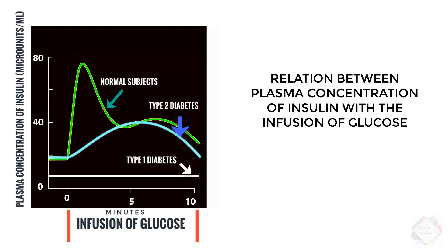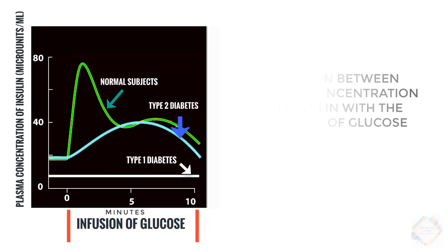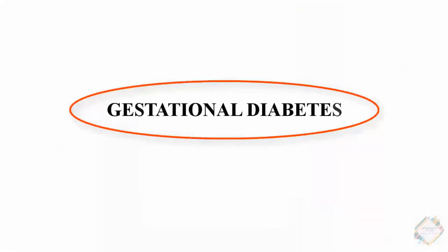In Type 2 diabetes, the beta cell mass may gradually decline over time. In contrast to Type 1 patients, those with Type 2 diabetes are often obese. Obesity contributes to insulin resistance, which is considered the major underlying defect in Type 2 diabetes.